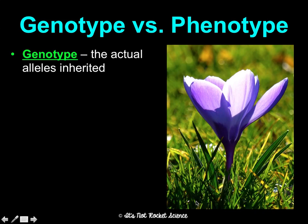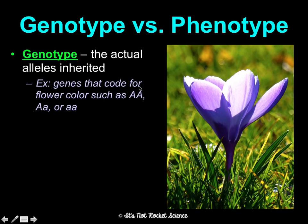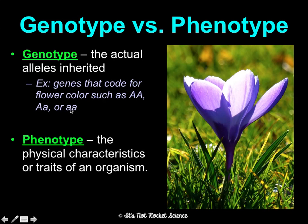These letters are genotypes — the actual alleles you inherit. Do you get two dominant alleles? Does one parent give you dominant and one give you recessive? Or do they both give you recessive? That's what a genotype shows. The phenotype is going to show the physical trait of the organism — purple flowers or white flowers, or in humans, brown hair or blonde hair. That's what's physically going to be expressed based on the genotype.